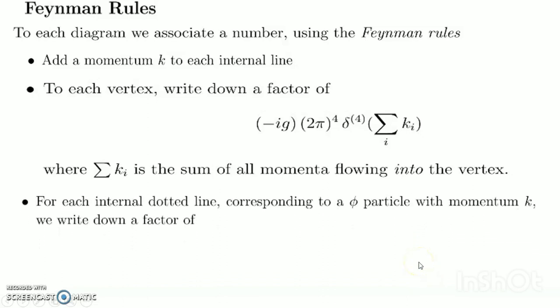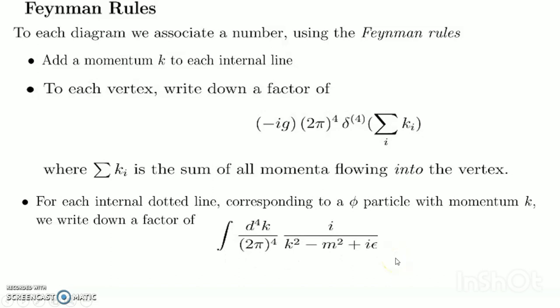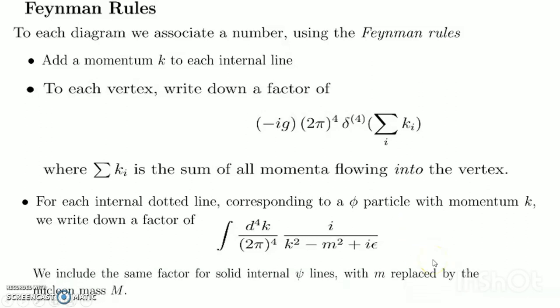For each internal dotted line corresponding to a meson particle with momentum k, write down a factor of d⁴k/(2π)⁴ times i/(k² − m² + iε). We include the same factor for solid internal ψ lines with m replaced by the nucleon mass.